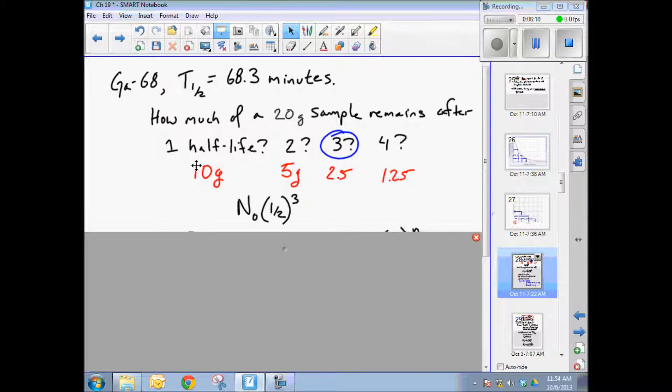We had n sub-zero. Let's make n sub-zero is equal to 20 grams times one half three times is equal to 2.5. Again, 20 times one half is 10, times one half is 5, times one half is 2.5. And so we get this answer. That's the answer we're looking for.